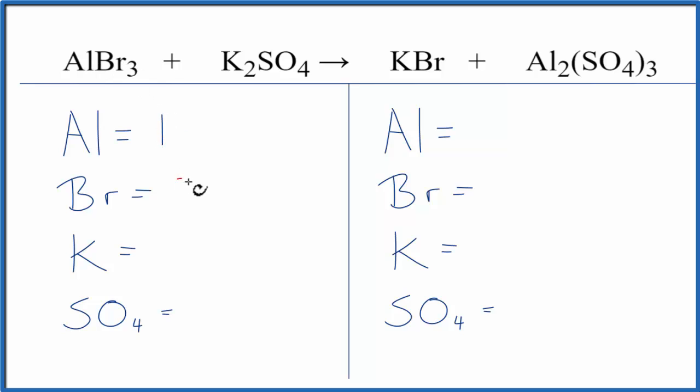So let's add the atoms up. I have one Al, three Brs, two Ks, and then just the one sulfate, the one SO4. On the product side, two Als, one Br, one K, and then three of these SO4s here.